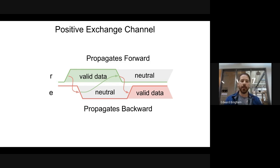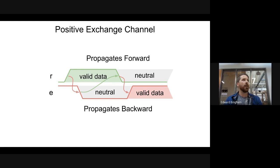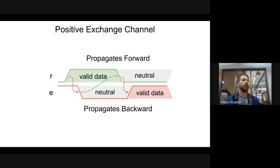Positive exchange channels communicate data on the up-going rule of the enable. When we first receive our requests, we lower the enable — reducing it back down to a neutral state. Then when the requests transition to neutral, we raise the enable up to a valid state. This is like a standard one-of-N encoding: neutral is 00, valid is 10 or 01.